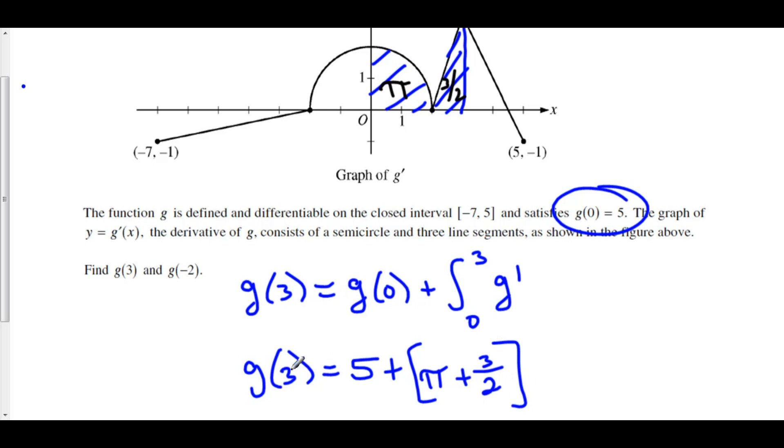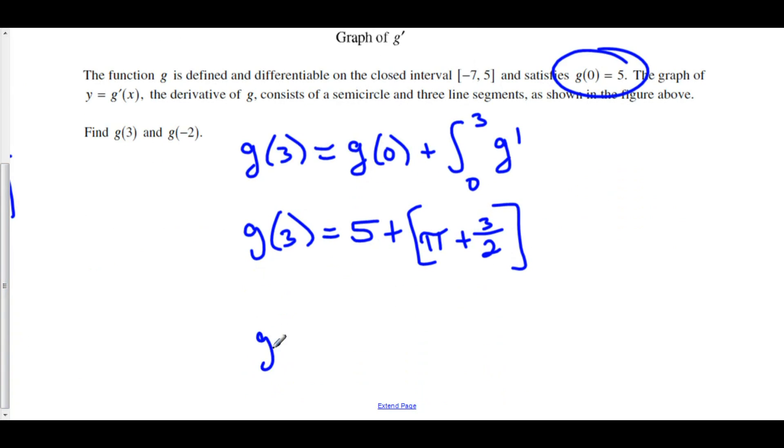So, g at 0 is 5. Our net change from 0 to 3 is given by pi plus 3 over 2. And finally, g of 3 is equal to, well let's see, 5 can turn into 10 over 2, plus 3 over 2 is 13 over 2, plus pi.